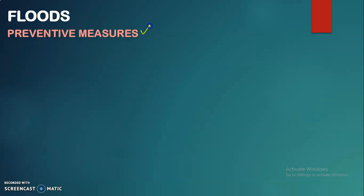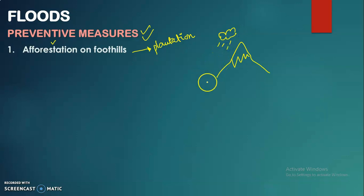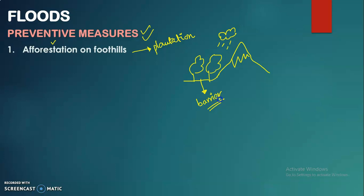Next are the preventive measures to reduce the impact of floods. We cannot stop floods completely, but we can reduce their impact. The first measure is afforestation on foothills — planting trees on the foothills of mountains. Since trees act as barriers against floods, afforestation reduces the speed and flow of water, creating less impact.